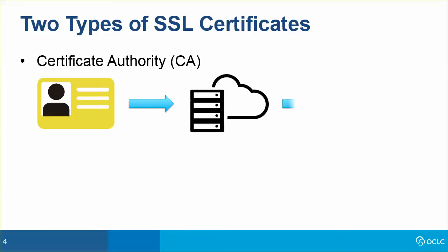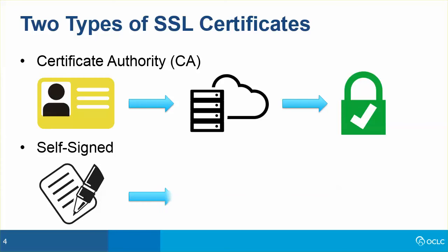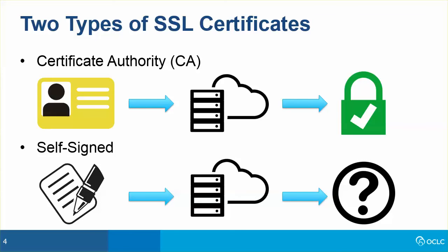Confirming virtual identities on the internet requires trusted third parties that verify a server's identity and issue a certificate for that server to present when asked for verification by another server. In the case of SSL certificates, a Certificate Authority or CA is that trusted third party. The SSL certificate is like a government-issued identification card, like a driver's license or a passport. The Certificate Authority is the agency that has verified your identity and issued the virtual ID that can be shown to other websites to verify your identity. There are self-signed certificates which are not issued by a third party and do not have the same trusted identity verification as a CA-signed certificate.